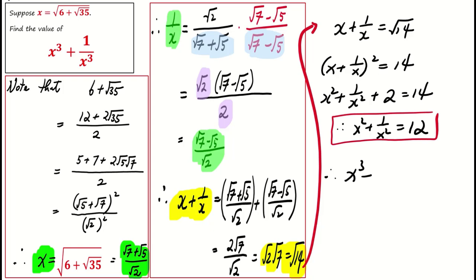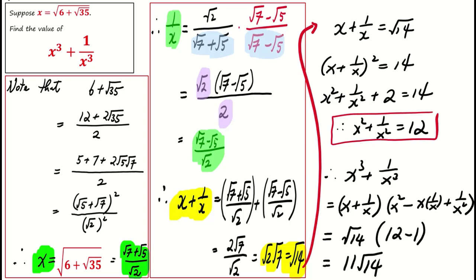For x³ plus 1 over x³, factorize it, and obtain (x + 1/x)(x² - x·1/x + 1/x²). By using the results we obtained just now, the value of this expression is 11 times square root of 14.